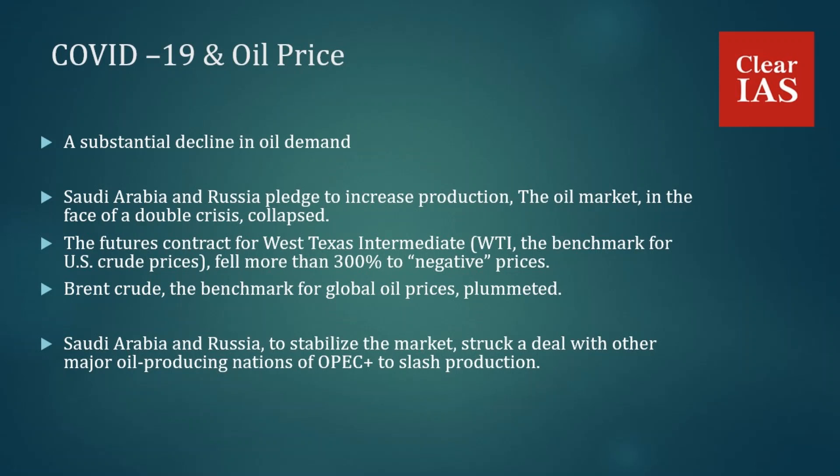A new deal between Saudi Arabia, Russia, and other major oil-producing nations of OPEC Plus to stabilize the market was introduced. Members agreed to cut production by 9.7 million barrels a day in May and June — the deepest cut ever agreed to by the world's oil producers. After that, the group agreed to steadily increase production until the agreement expires in April 2022.